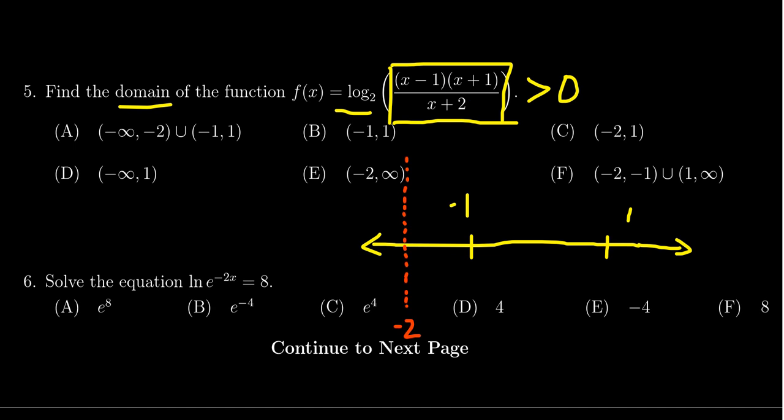The next thing to do would be consider end behavior. Is there a horizontal asymptote here? So as x goes towards infinity, this function will be approximately the same thing as x squared over x, which is the same thing as x.